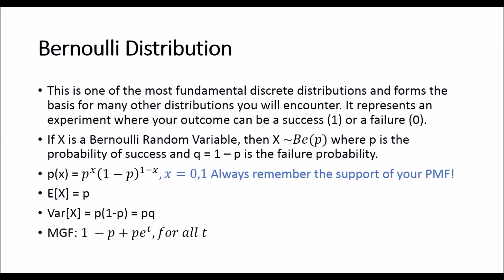But you can swap the order of these, and as long as you redefine your equations, everything will work fine. So if X is a Bernoulli random variable, then X is distributed, and we denote it as Be(p) or B sometimes, with p, where p is the probability of a success, and q, which is equal to 1 minus p, is the failure probability.